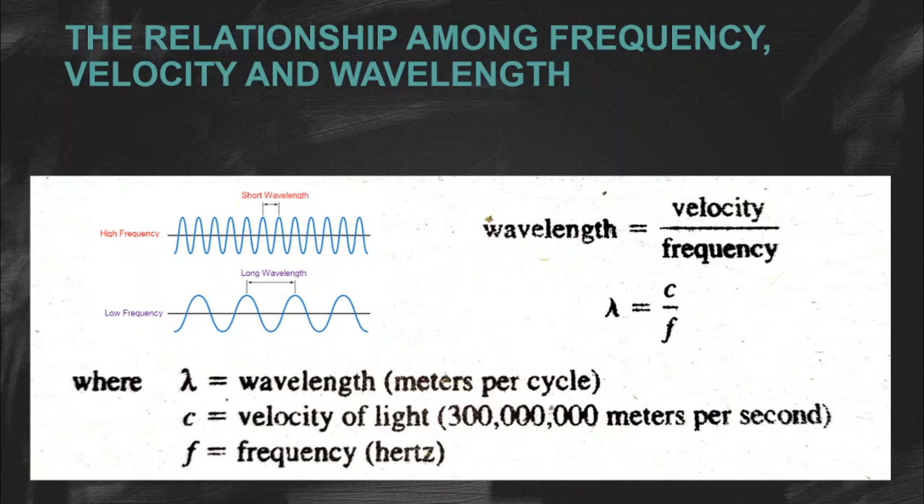And through that, magpoform natin yung formula which is wavelength is equal to the velocity of light over frequency. Kung makikita niyo dito, ang symbol for wavelength ay lambda. Then, ang C ay for the velocity of light or the speed of light, which is 3 times 10 raised to 8 meters per second. At ang F naman ay para sa frequency natin na ang unit ay hertz.